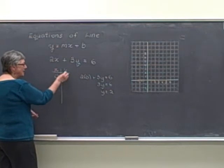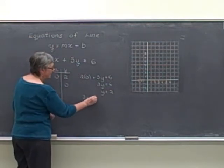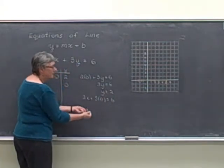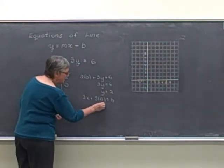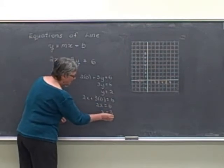We can do the same thing with y. If I choose y equal to 0, I'm looking at the equation 2x plus 3 times 0 is equal to 6. And 3 times 0 is 0. So the equation simplifies to 2x equals 6, x equals 3.